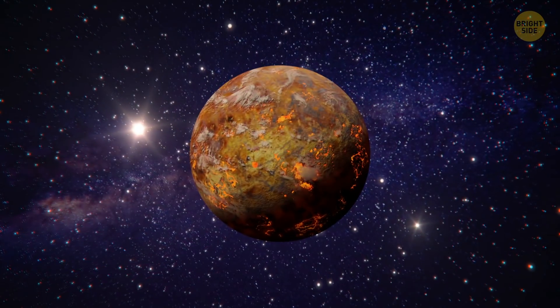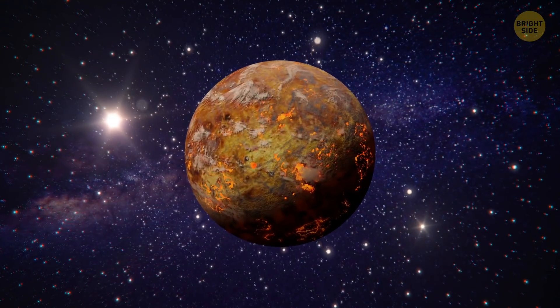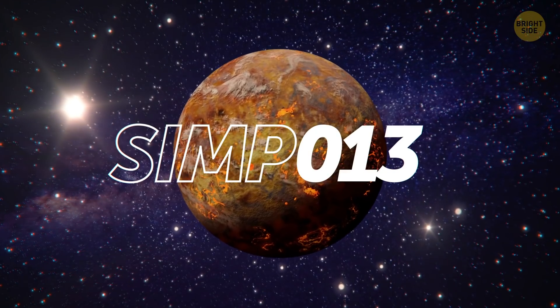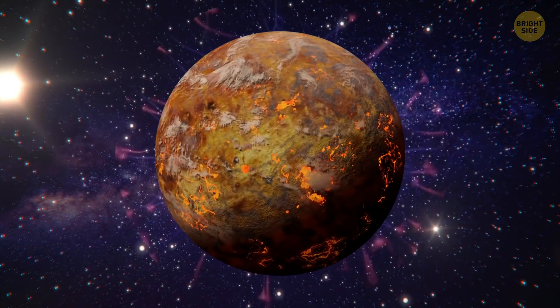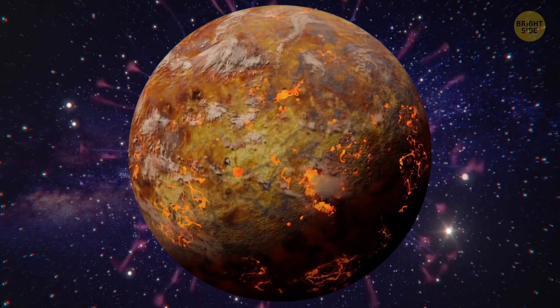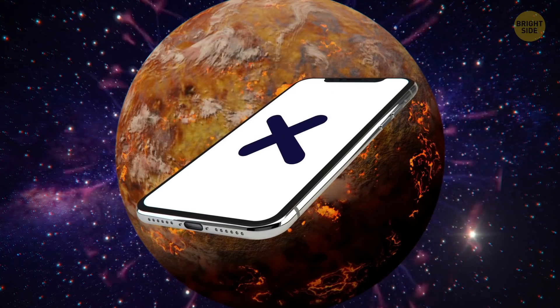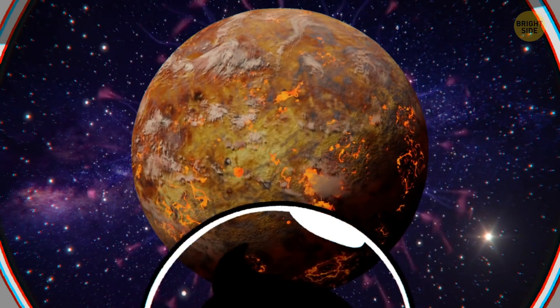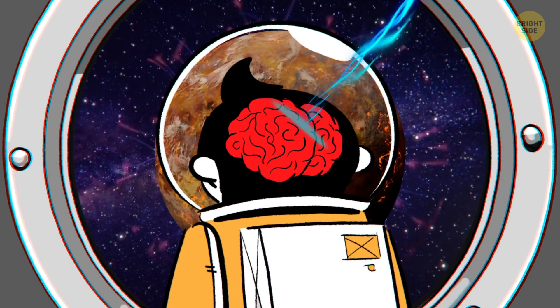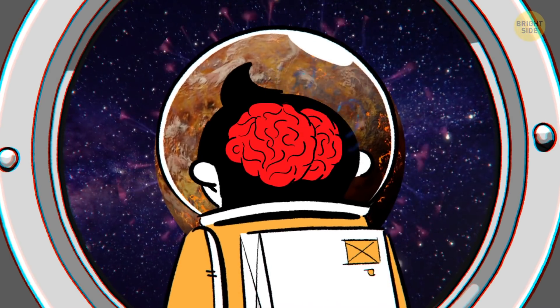A rogue planet with a romantic name, SIMP0136, seems to have a magnetic field 200 times stronger than Jupiter's. And electronics wouldn't even start working. So, bad news for your gadgets. The human brain is an electrochemical machine too, so it'd probably have troubles functioning as well.